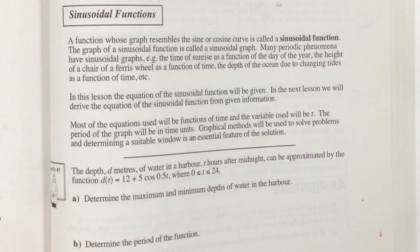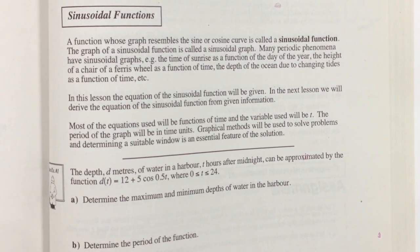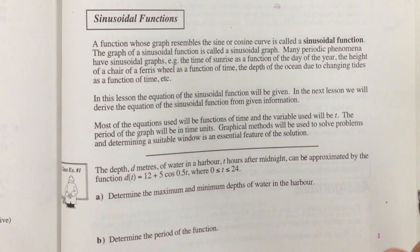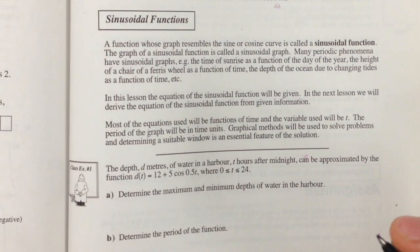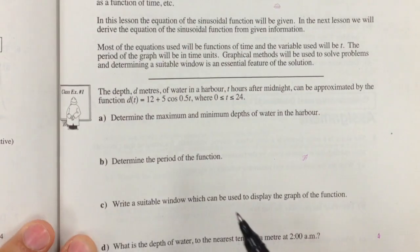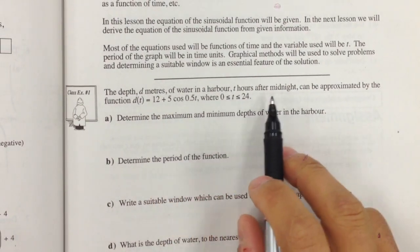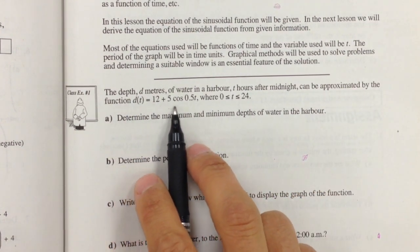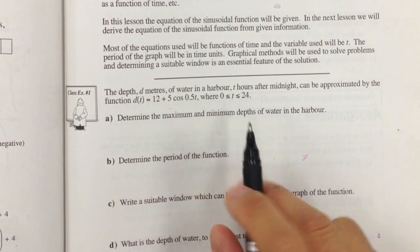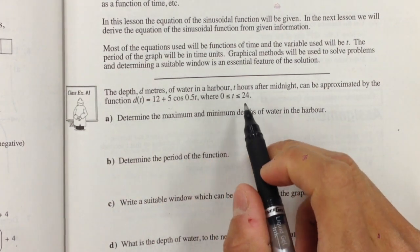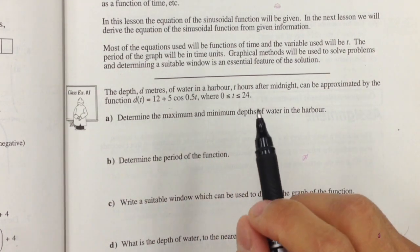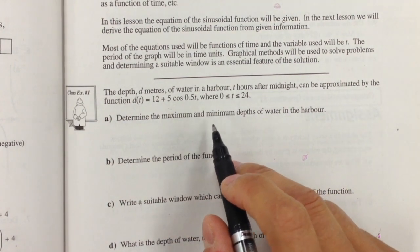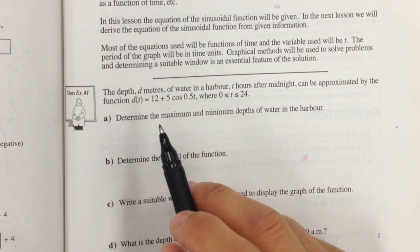Today we're going to look at what these graphs look like and the word problems of these functions. In this first example, the depth of water in a harbor after midnight can be approximated by the function d(t) = 12 + 5cos(0.5t), where 0 ≤ t ≤ 24. t is in hours, and d is the depth of the water in meters.